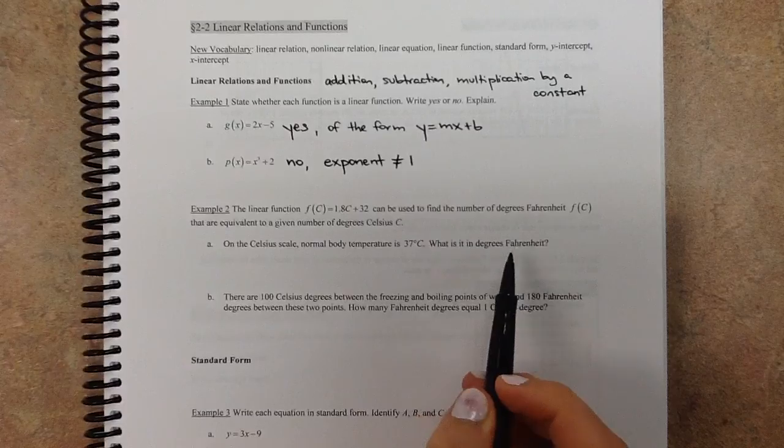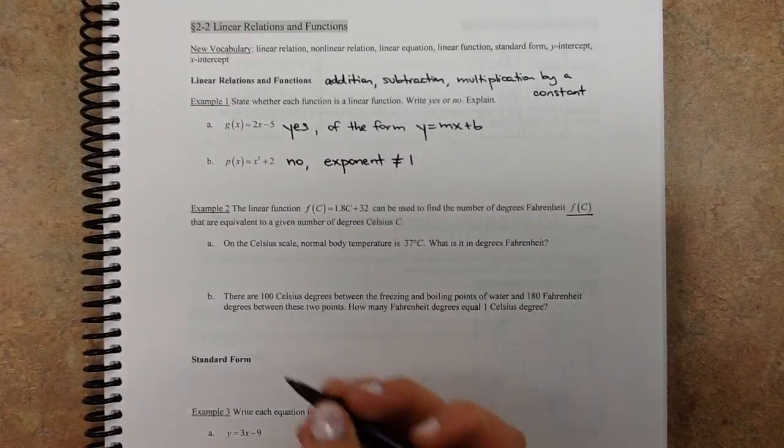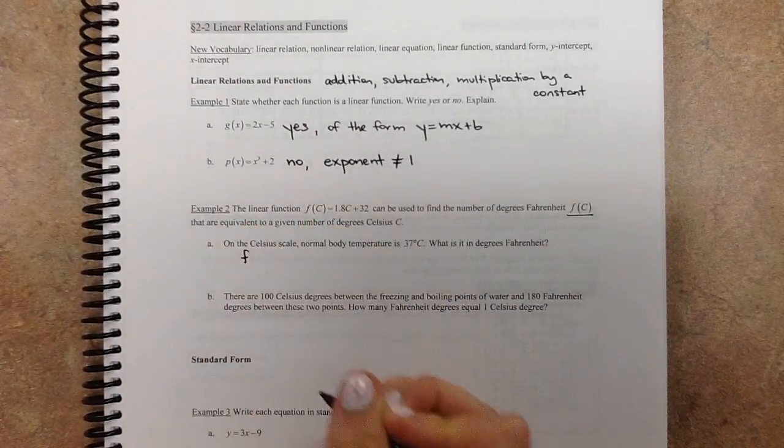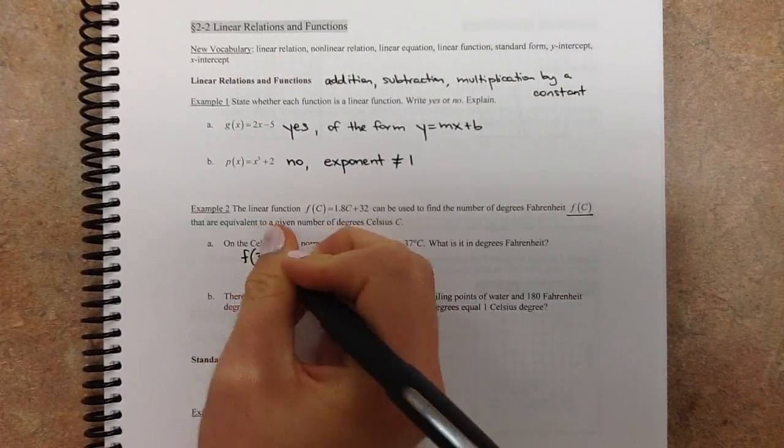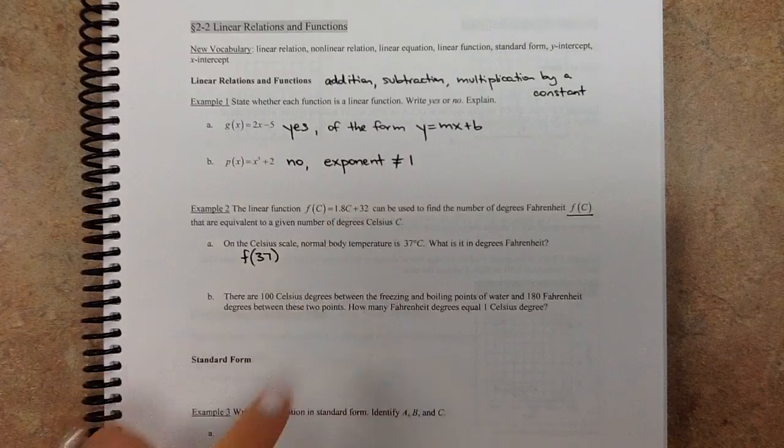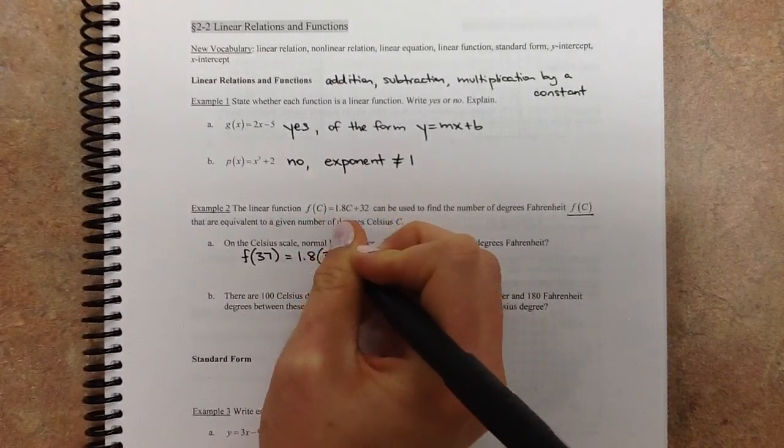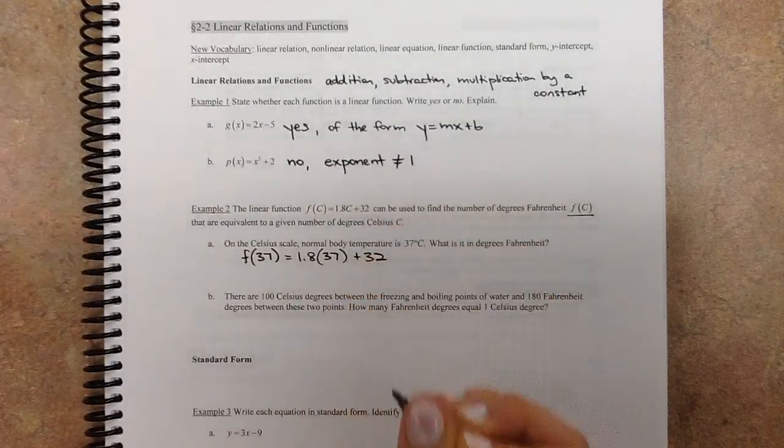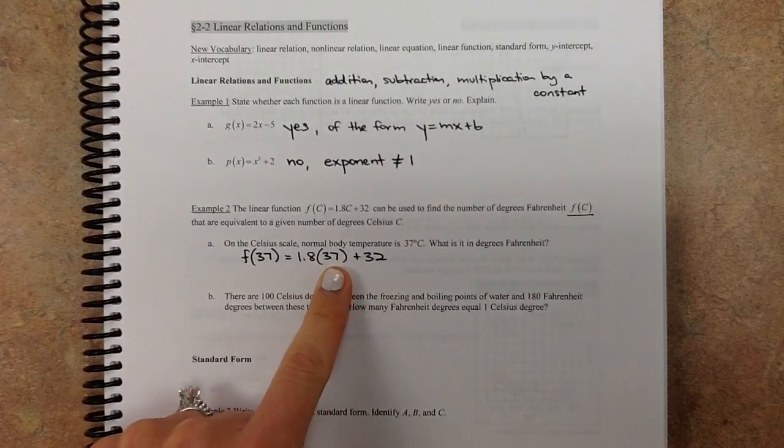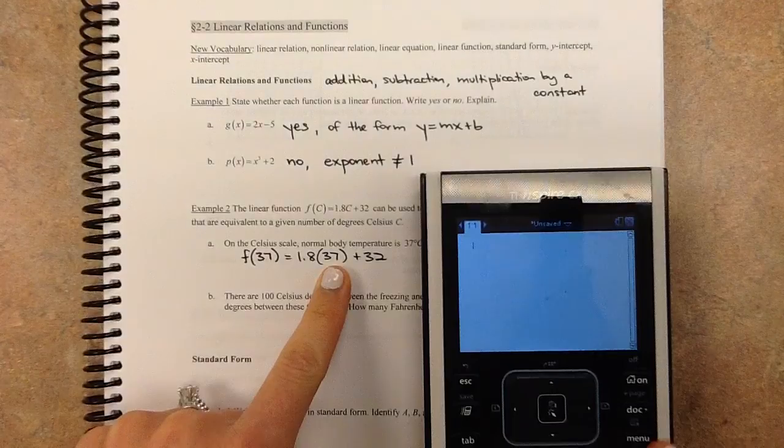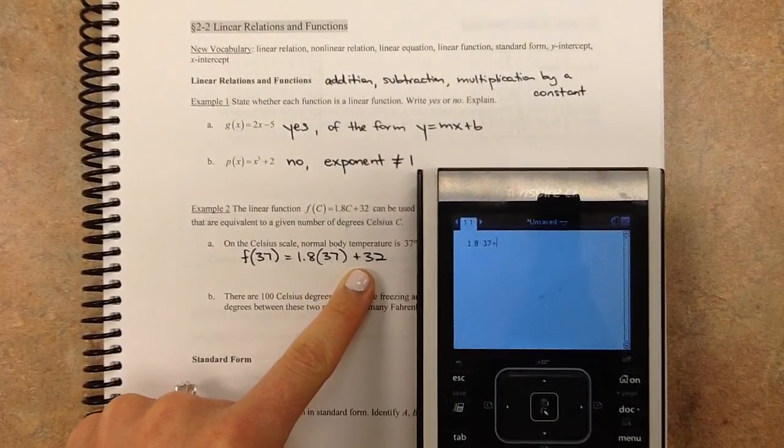We're trying to figure out what the Fahrenheit equivalent would be. So instead of writing this, remember your function notation? You can write f and then in the parentheses write what you want to plug in for c. And we want to plug in 37 for c. So then we just go into this function. We plug it in. So we have 1.8 times 37 and then plus 32. So we could probably just plug that into your calculator. Make sure that you're writing this down so that you're showing the work first. So you could write 1.8 times 37 and then plus 32.